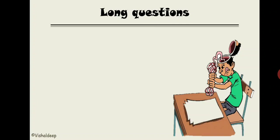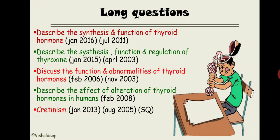These are the list of questions that are already asked: Describe the synthesis and function of the thyroid hormone. Describe the synthesis, function and regulation of thyroxine. Discuss the function and abnormalities of the thyroid hormones. Describe the effect of alteration in thyroid hormone in humans — the applied aspect and cretinism. Again it is applied aspect; it is a short answer question.